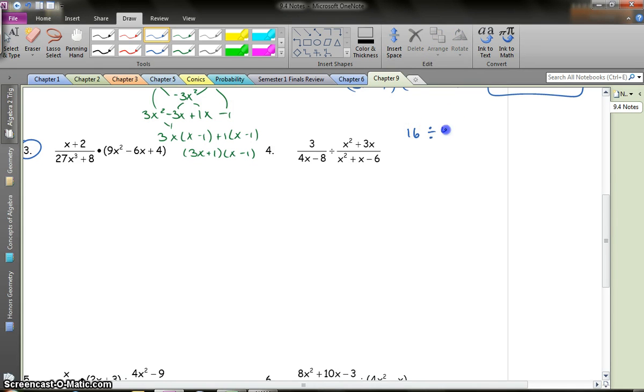16 divided by 4. We all know the answer is 4. That is equivalent to 16 times 1 fourth. 16 times 1 fourth still gives me 4. Think of it if you have a dollar. A dollar divided into 4 is 25. Dollar times a fourth is a quarter. Still 0.25. Okay, so dividing by a number is the same as multiplying by the reciprocal.